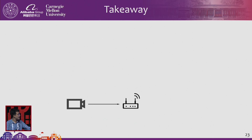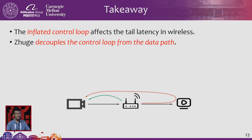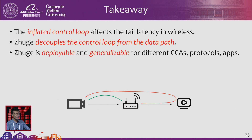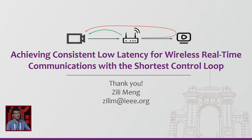The key takeaway is that in real-time communications, the inflated control loop affects tail latency. We can decouple the control loop from the data path to let the sender know about congestion earlier, ensuring it can reduce its sending rate in a timely manner. Our solution is designed to be deployable and generalizable across different protocols, applications, and CCAs. Evaluation shows it improves performance by around 70%. We are in the process of pushing Zhuge to be deployed in the wild with real products, and welcome collaboration opportunities.